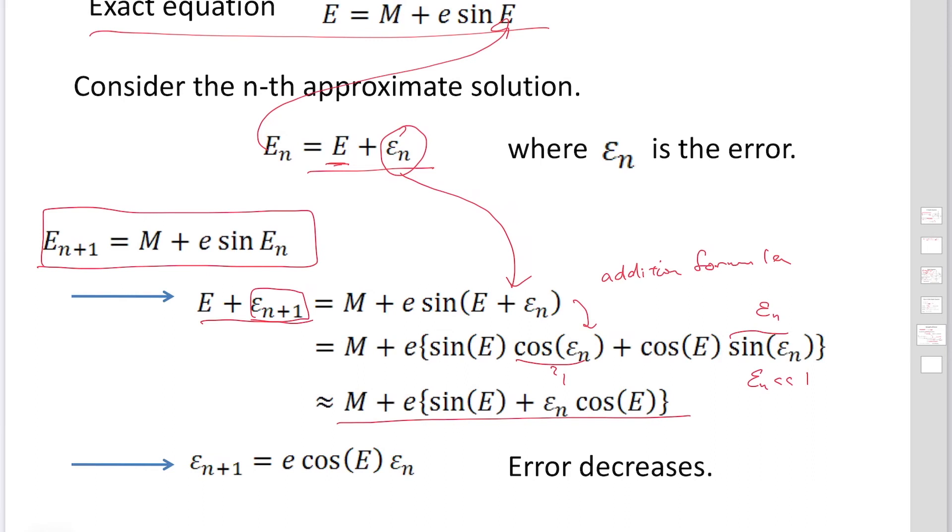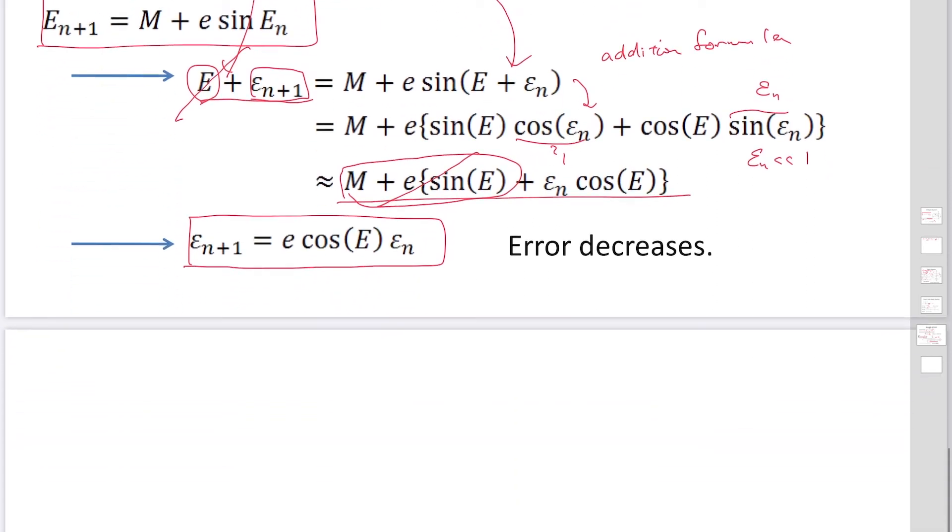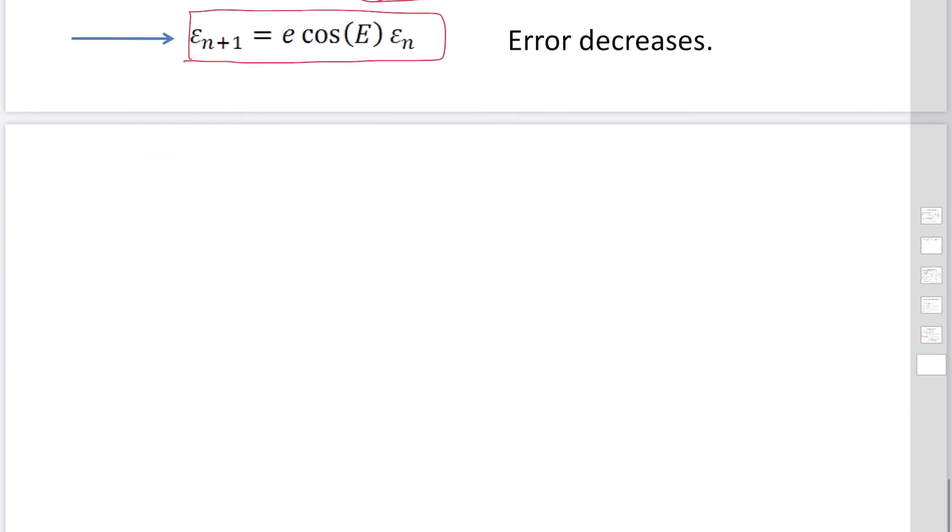And the first terms and then second terms exactly equal to E because of this original equation. Using this equation it's going to be cancelled out. Then we have a relation for the errors: Epsilon sub n plus 1 equal E cos E times Epsilon n. So finally we have a relation for Epsilon sub n equal E cos E to the n minus 1 Epsilon 1.